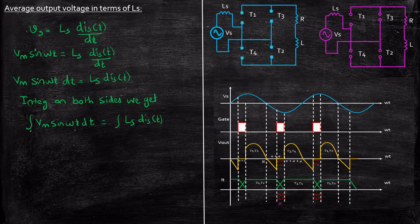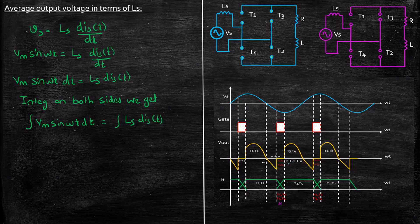When we consider with respect to time, carefully observe the lower and upper limits. We are seeing the voltage Vs applied to the inductor directly — whatever we are supplying appears across the inductor during the period of pi plus alpha to pi plus alpha plus mu. That is when overlapping is taking place according to the working we have seen. So the lower limit will be pi plus alpha and the upper limit will be pi plus alpha plus mu.